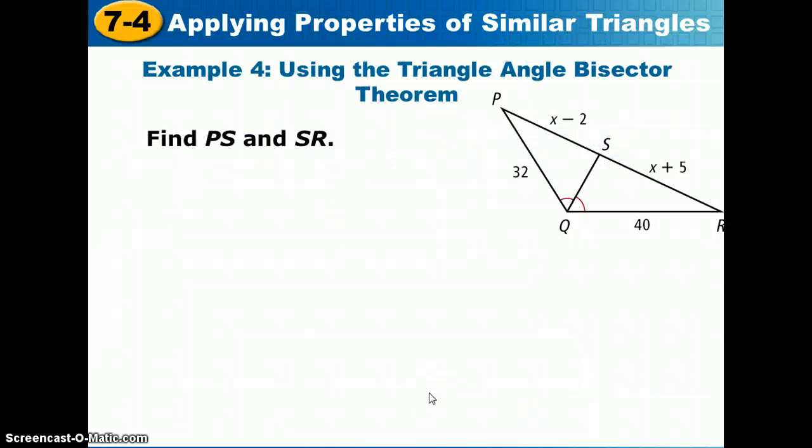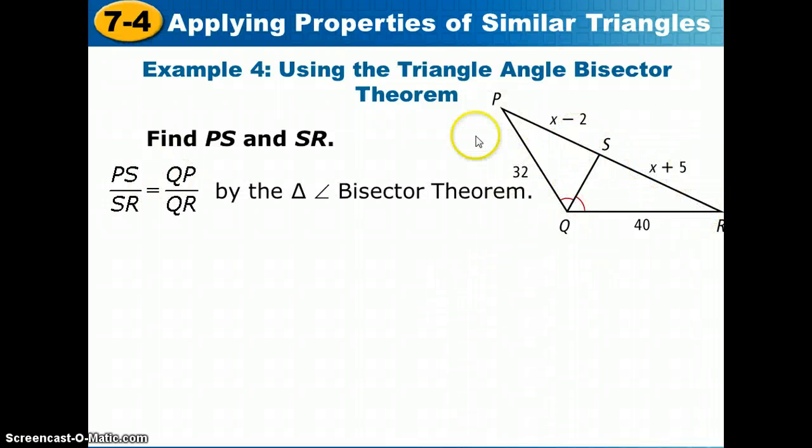Alright, our final example, we'll be using the triangle angle bisector theorem to find the lengths PS and SR. When we have the angle bisector in a triangle, it separates the opposite side into two lengths that are proportional to the other sides of the triangle. So, we would know, in this case, that PS to SR is the same ratio as QP to QR.